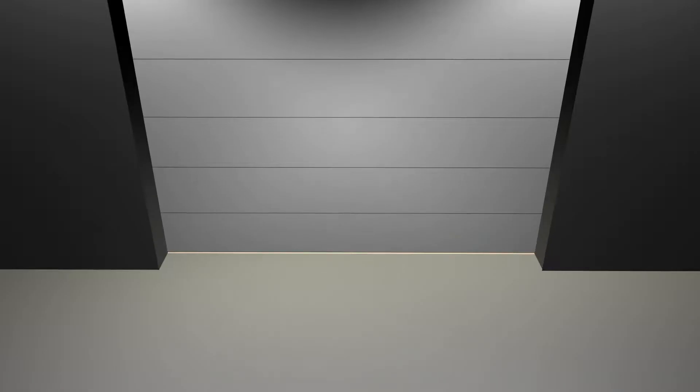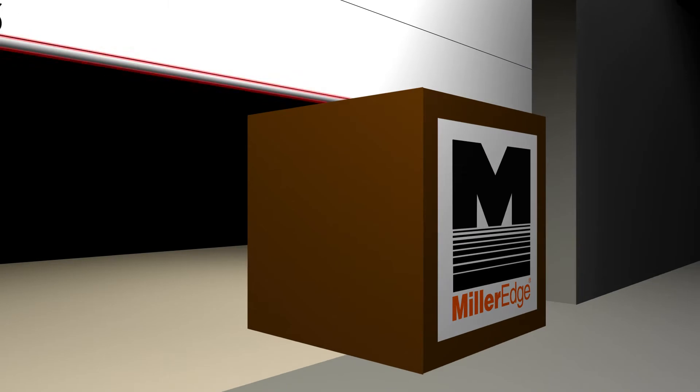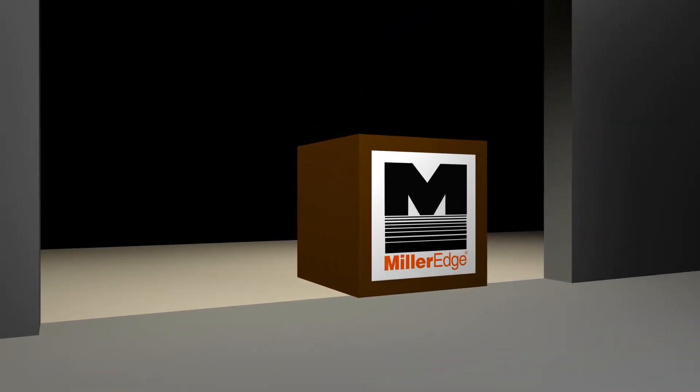What is a sensing edge? A sensing edge is a safeguarding device that attaches to the leading edge of a motorized door or the leading, trailing, or stationary point on a motorized gate. When an object comes in contact with it, it sends a signal to the operator to stop and reverse its direction.